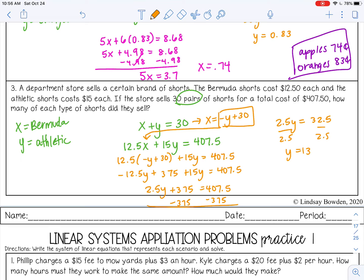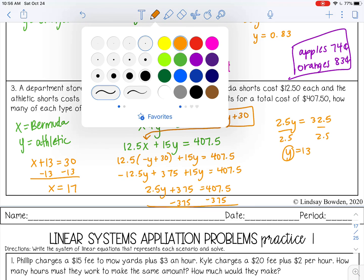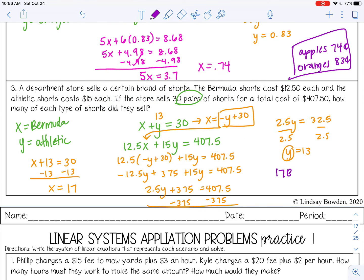All right, if you need a second to catch up, I will let you because I know that was a lot of algebra. If you need more time, you can pause the video now. Okay, so we have our athletic shorts, which is y, we sold 13 of those. From here, it's pretty easy because we know that the total amount sold was 30. And if we sold 13 athletic, then we can just subtract 13 from 30, which gives us the amount of Bermuda shorts, which is 17. So my final answer here is 17 Bermuda shorts and 13 athletic shorts.